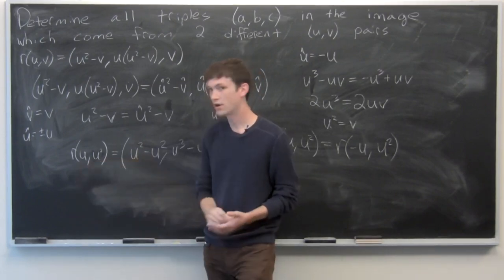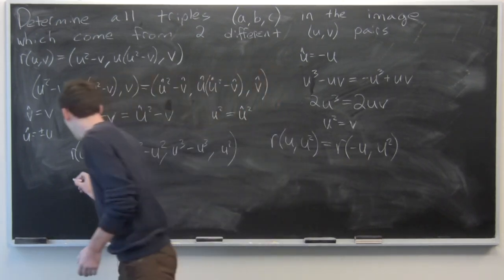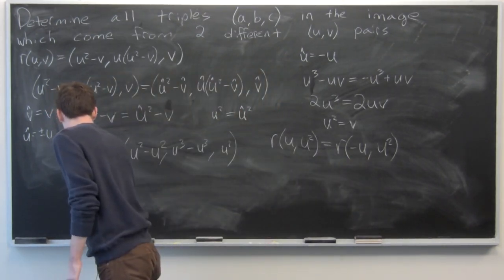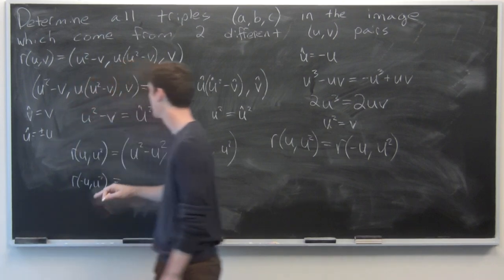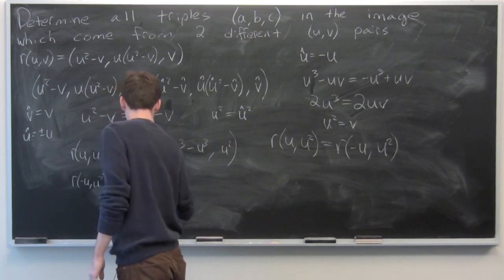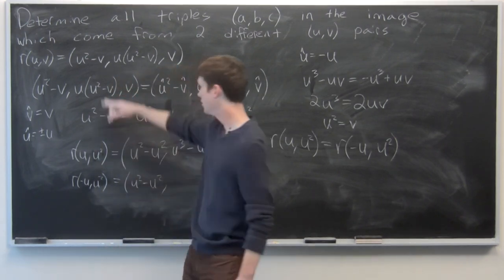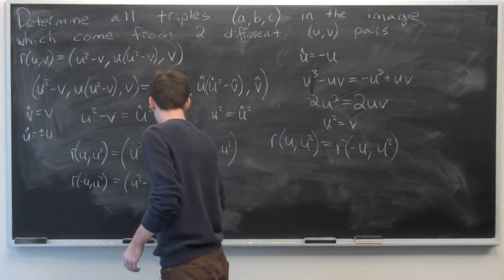u-cubed minus u-cubed. And similarly, if we plug in to r of negative u, u-squared, we get u-squared minus u-squared, minus u-cubed.